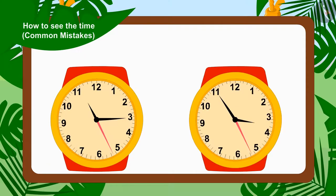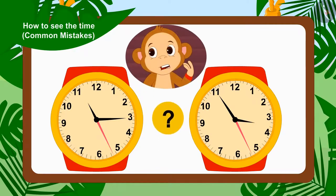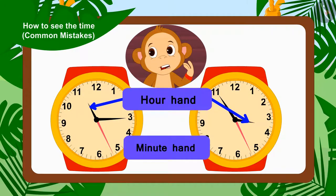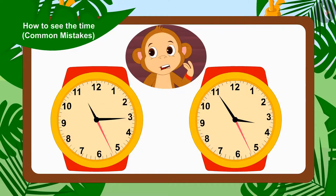Now, can you tell by looking at these two watches what mistake Babban has made? Yes, Babban replaced the hour needle with the minute needle, and the minute needle with the hour needle to see time on the watch. So Babban saw the wrong time.